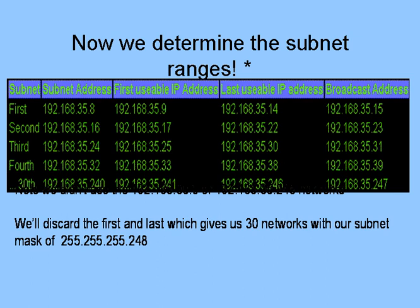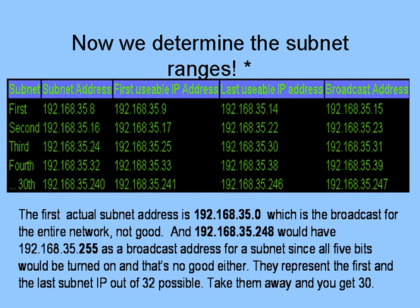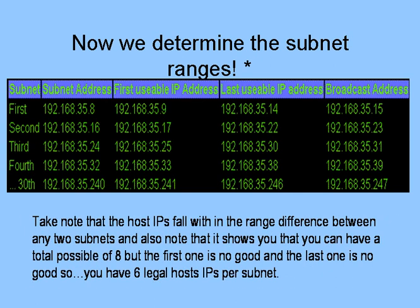We discard the first and the last, giving us 30 valid networks with subnet mask 255.255.255.248. The first actual subnet address 192.168.35.0 is the broadcast for the entire network — not good. And 192.168.35.248 would have 192.168.35.255 as a broadcast address for a subnet since all 5 bits would be turned on — that's no good either. They represent the first and last of the 32 possible, so take them away and you get 30. The host IPs fall within the range difference between the two subnets, with a total possible of 8, but the first and last are no good, so you have 6 legal host IPs per subnet.